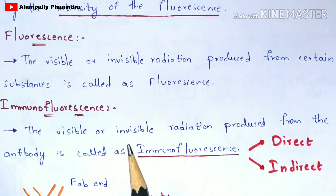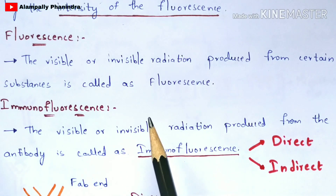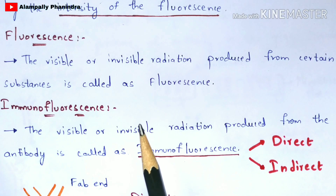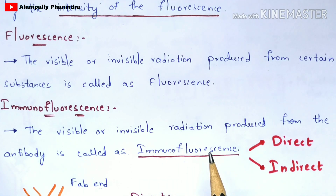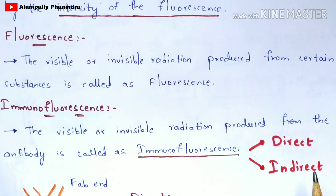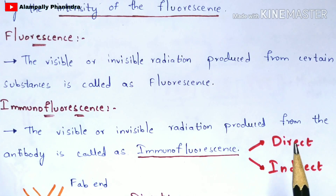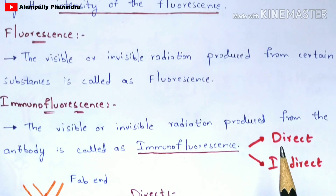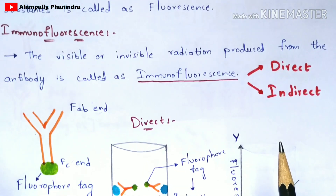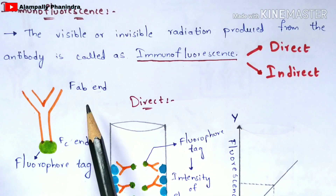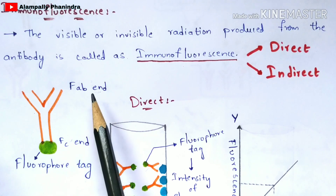You can understand these definitions better when I explain the procedure. This immunofluorescence technique will be explained in two different types: the direct technique as well as the indirect technique. Before entering into the direct technique, you have to know the basic structure of the antibody, which consists of the FAB and the FC region.